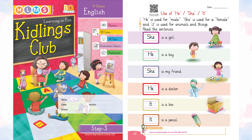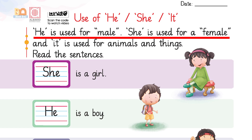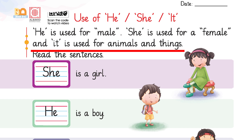As-salamu alaykum dear kids. You already know that we use 'he' with the male, we use 'she' with the female, and we use 'it' with non-living objects and animals.